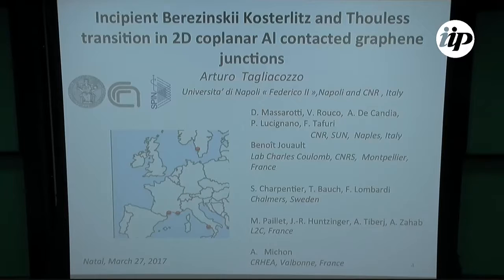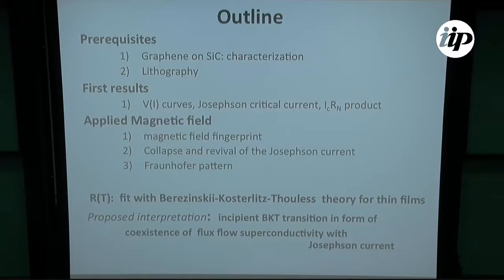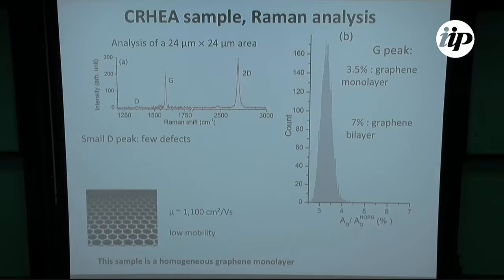I will skip the outline and I will tell you about magnetic fingerprints, which are really very special. First, let me tell you something about the characterization of this graphene. There is practically a D peak which is absent, which tells you that there are few defects. The integrated area of the G peak is something like 3.5%, which tells you that it's practically a graphene monolayer that you are dealing with.